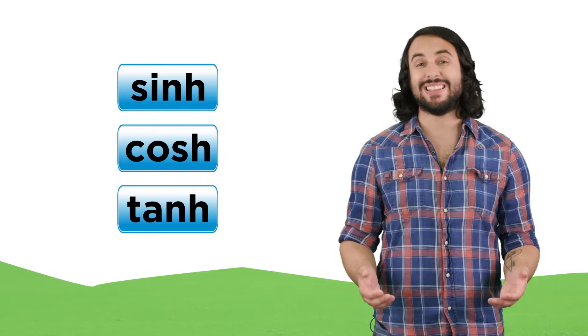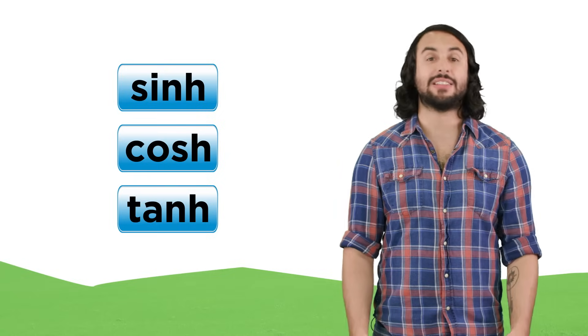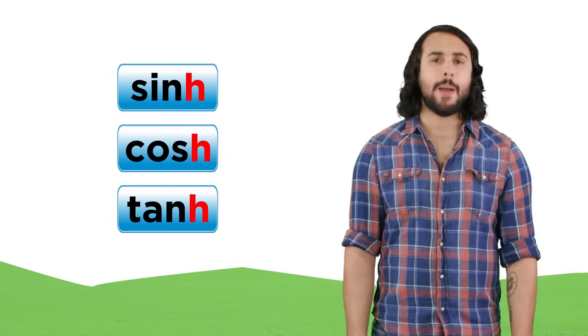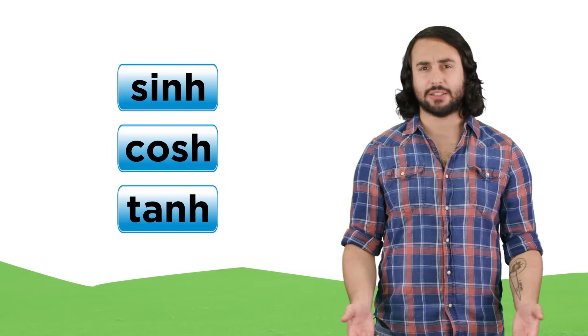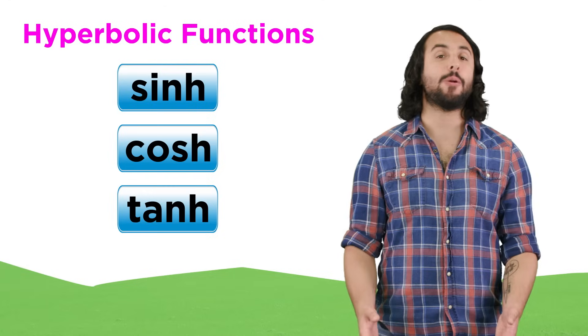But on certain calculators, you may also see these symbols, which look like sine, cosine, and tangent, but with the letter H tacked on at the end. What are these things? These are called hyperbolic functions.